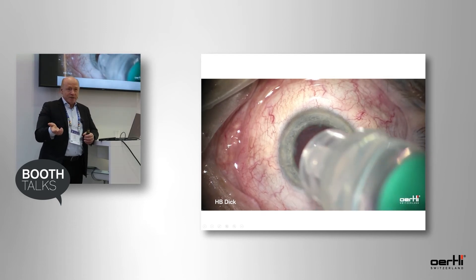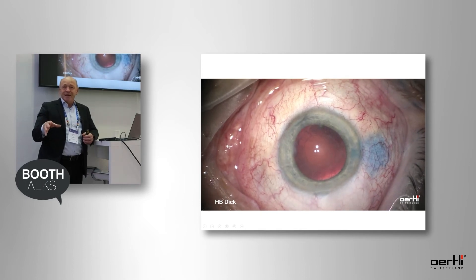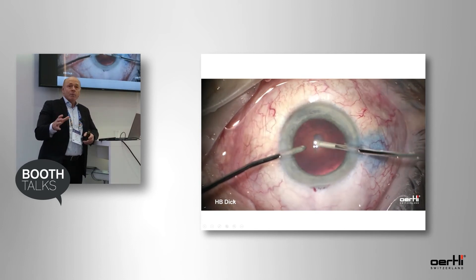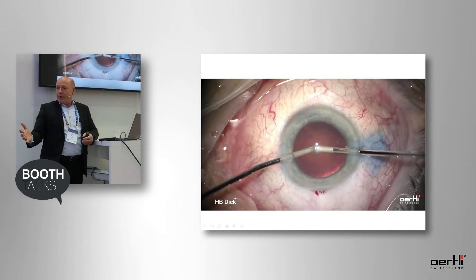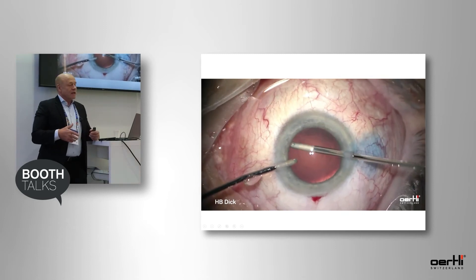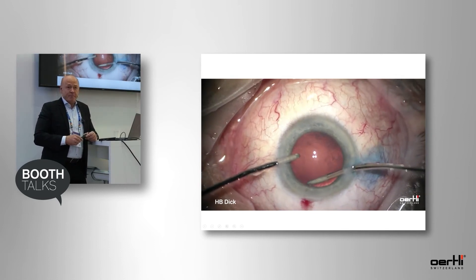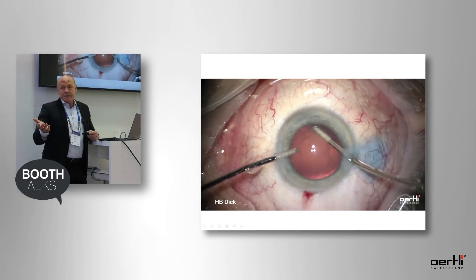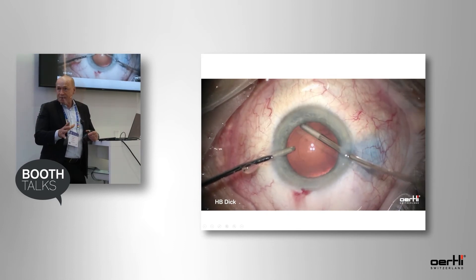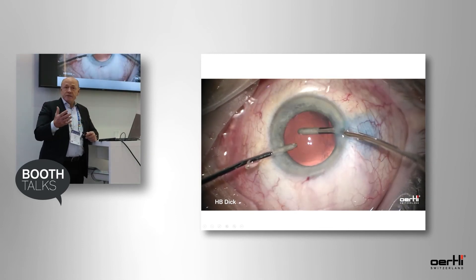After IOL implantation, you redesign the anterior capsulotomy according to the position of the lens. What you want is a 360-degree overlap of the anterior capsule on top of the IOL, with no buttonhole effect where the capsule is off, because this may induce fibrosis — fibro-metaplastic epithelial cells that then fibrose. And if you are implanting a premium IOL, this can even lead to decentration of the lens. So I intentionally did a smaller capsule opening, but it's already sufficient to work.